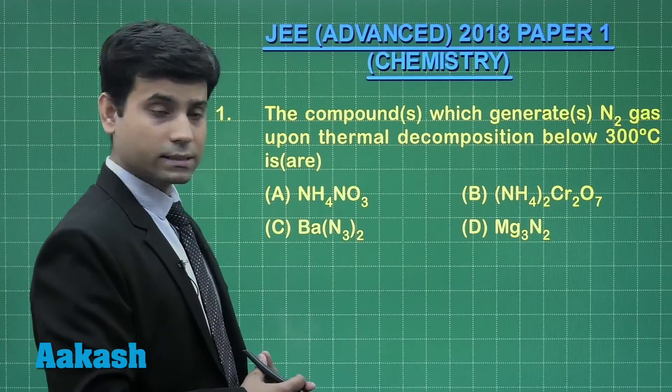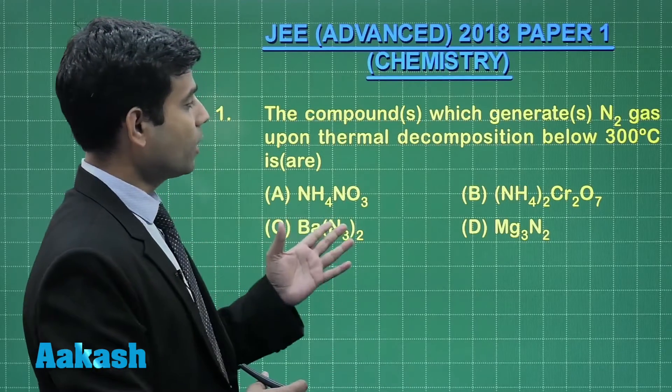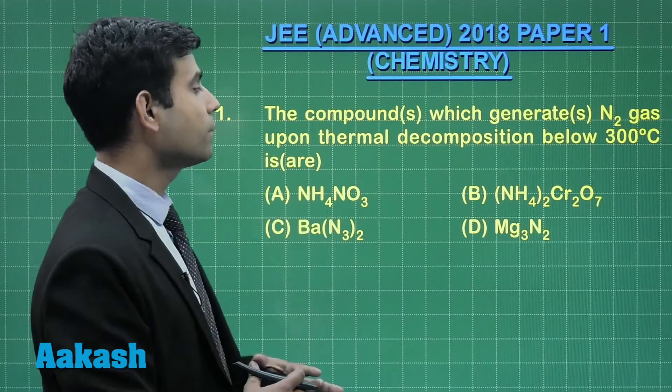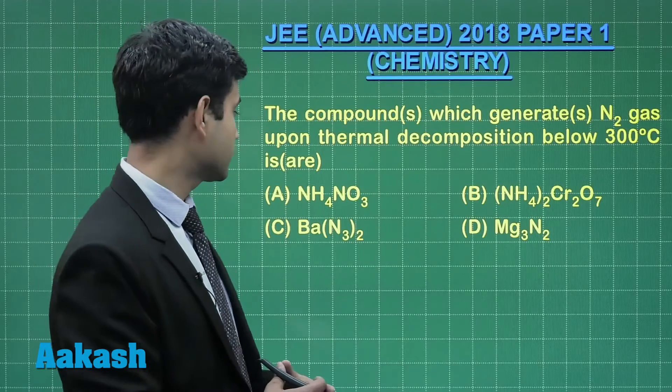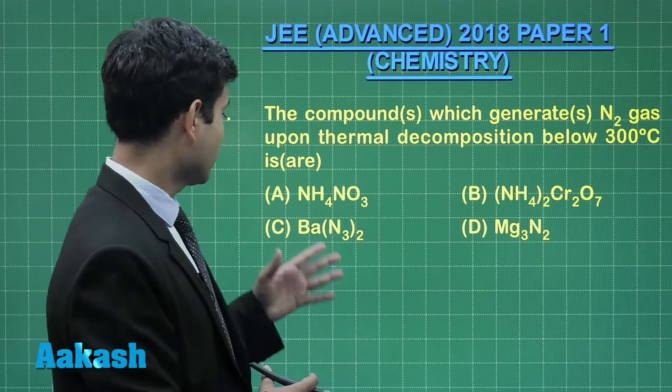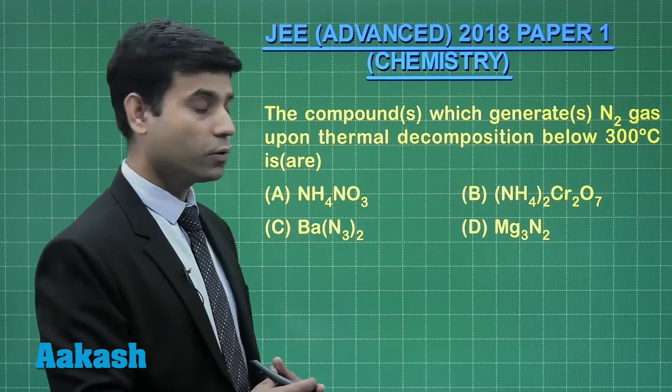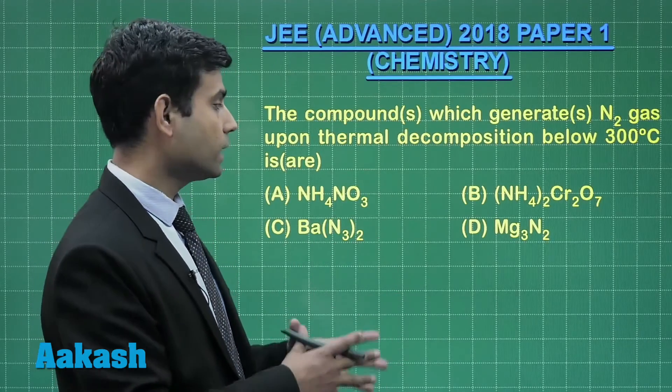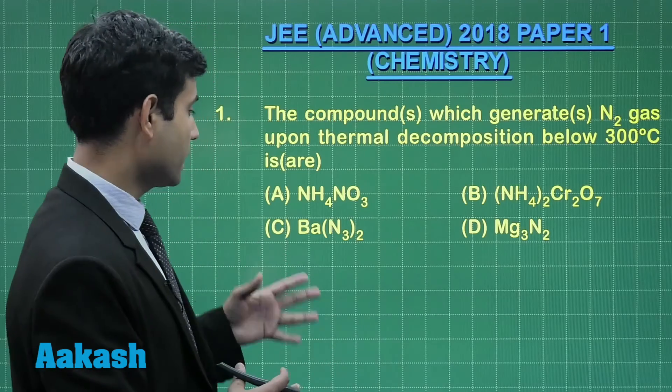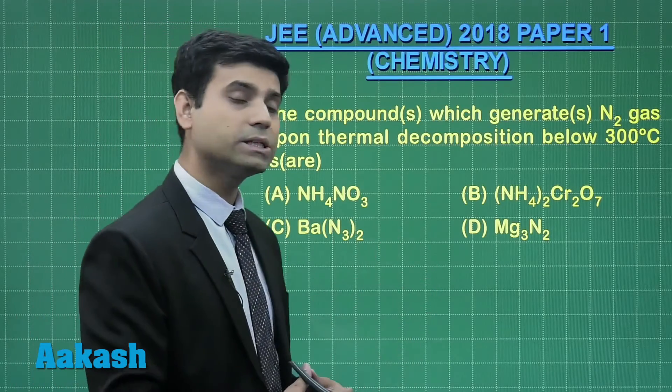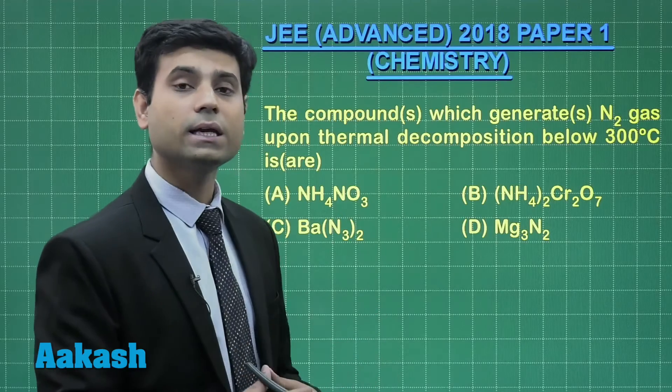This is question number 1, which says the compound or compounds which generates nitrogen gas upon thermal decomposition below 300 degree Celsius is or are. The options given are: A) ammonium nitrate NH4NO3, B) ammonium dichromate (NH4)2Cr2O7, C) barium azide Ba(N3)2, and D) magnesium nitride Mg3N2.